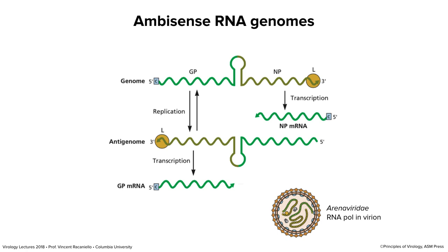The last genome type is ambi-sense. Ambi-sense means the genome can have both plus and minus on the same molecule — it can't decide what it wants to be. Here's the genome of an arenavirus like Lassa virus: a little bit is plus-stranded and a little bit is minus-stranded. This virus has to have a polymerase in the particle because even though there's a plus open reading frame present, for whatever reason it is not translated when the genome infects a cell. The first mRNAs made are complementary to the minus sequence at the three-prime end. So the virus brings in an RNA polymerase to do this transcription — this is something you couldn't predict from first principles.